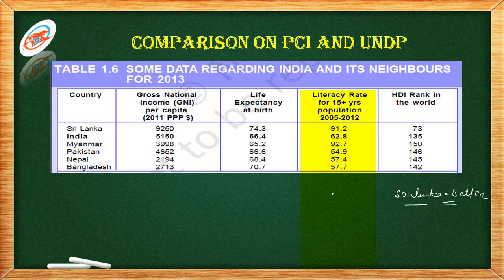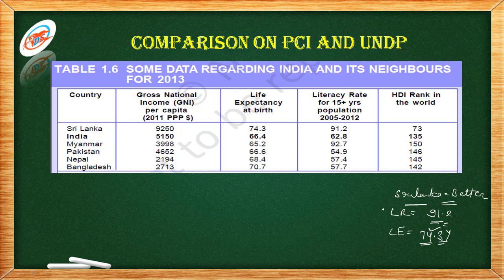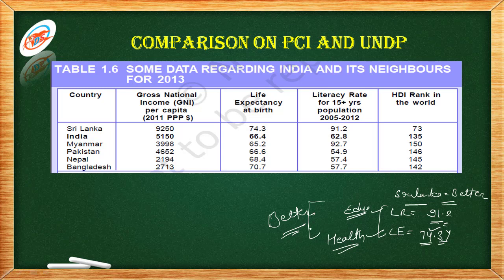Why is that? The simple reason is that Sri Lanka's literacy rate is better — 91.2% compared to 62.8% in India. At the same time, life expectancy in Sri Lanka is 74.3 years, while in India this figure is only 65 years. These two things tell us that Sri Lanka's educational policies and health status and facilities are better, that's why Sri Lanka is above India in UNDP or HDI ranking.